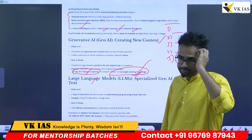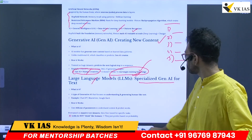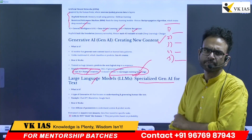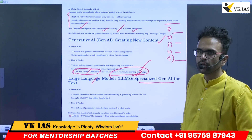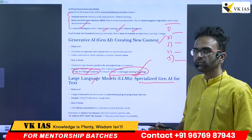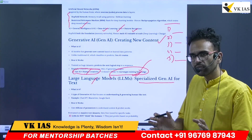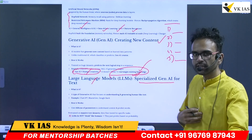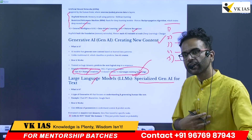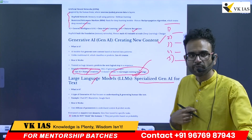Large Language Models — LLMs — is the next concept. LLMs are specialized generative AI for text. ChatGPT, for example, is an LLM from OpenAI. It is a type of generative AI that focuses on understanding and generating human-like text. Other examples include BharatGen and Google Bard, which is now called Gemini. The technology works with billions of parameters — it understands your question in your natural language, translates it into computer language, and gives the output back in natural language like English.